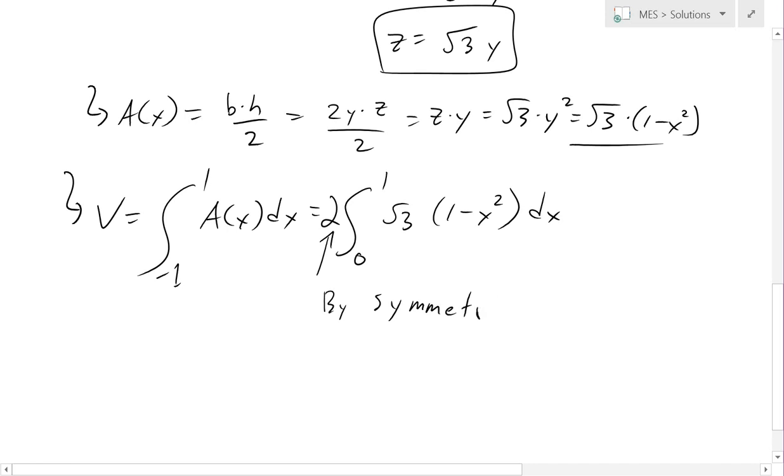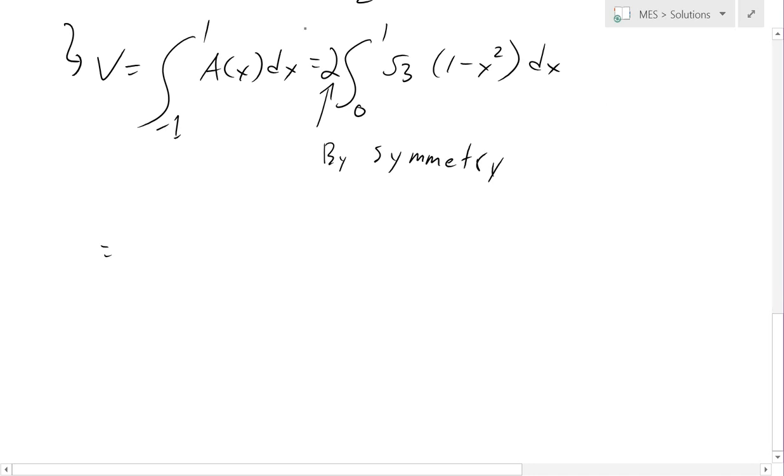So this helps us in our calculation. And now we basically just solve our integral. So this equals 2 times 2 square root 3 integral from 0 to 1 of 1 minus x squared dx. Now this is going to be the integral of 1 is x, minus x cubed divided by 3, and this is from 0 to 1. So when you plug in 0, they just cancel. So this saves some time in our calculation by using symmetry.